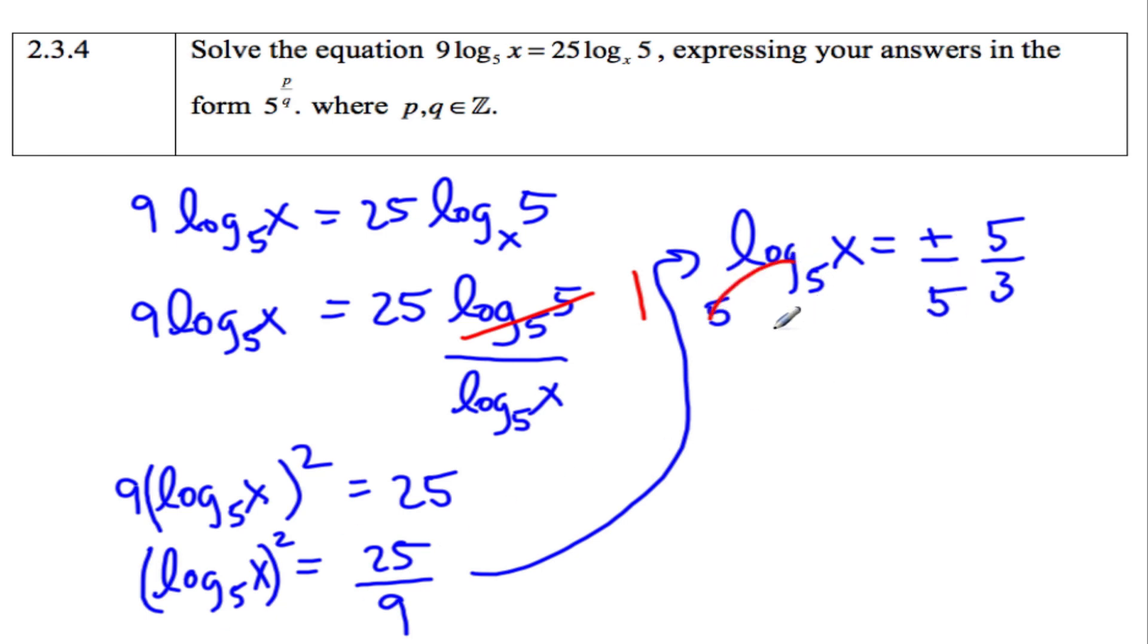So these will go, and I'll be left with x = 5^(5/3) or x = 5^(-5/3), which is also 1 over 5^(5/3). So we have these two answers. Actually, the problem says to leave it in this form, so this is the answer.